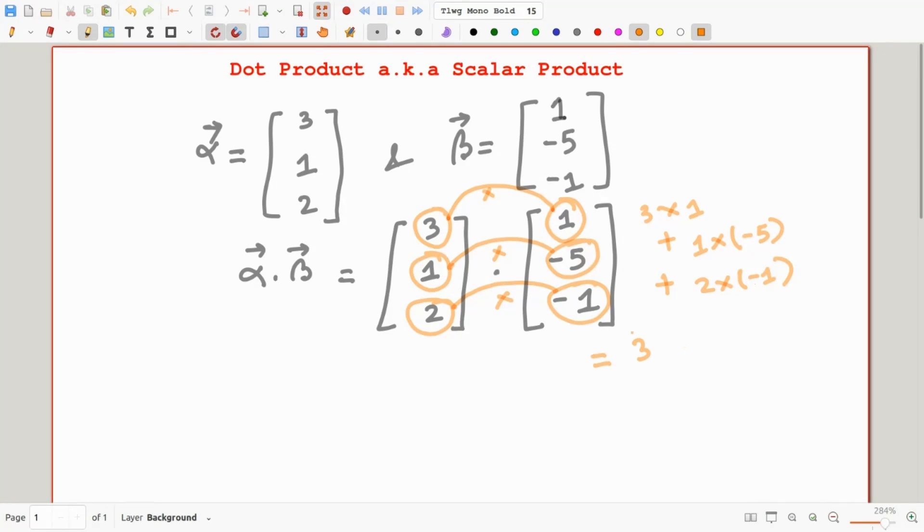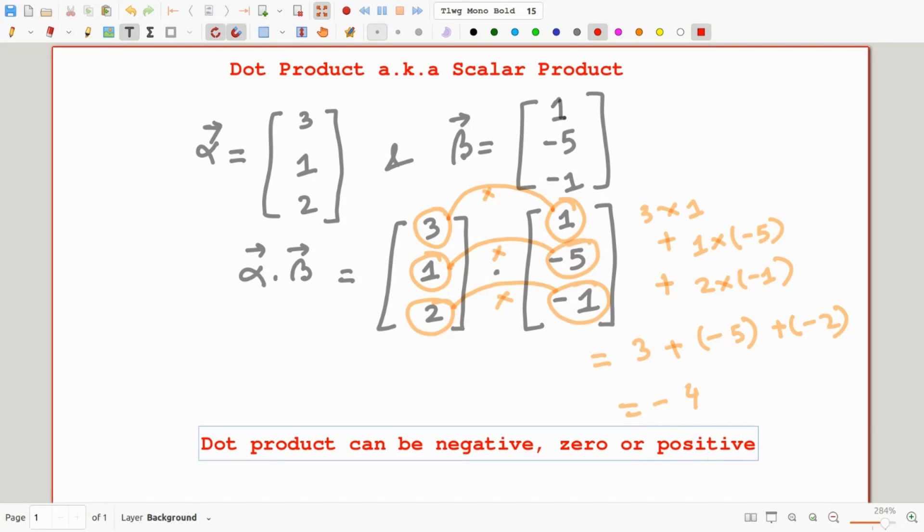We will add this 3 times 1 plus 1 times minus 5 plus 2 times minus 1, that gives minus 4. There is the dot product worked out, pretty straightforward. And of course, as you can see, it can be a negative number. It can also be 0 or a positive number. But the final outcome is simply a pure number.